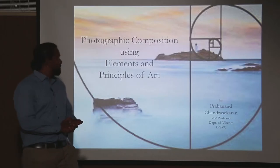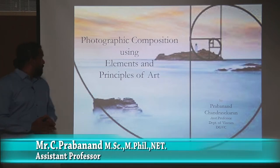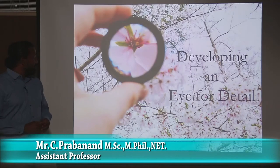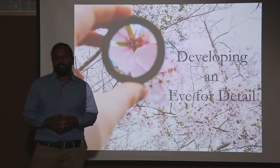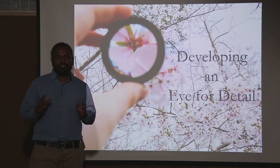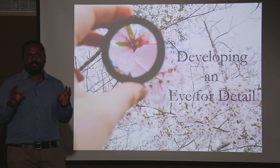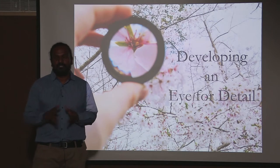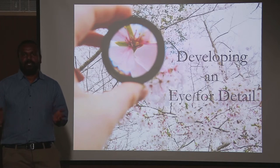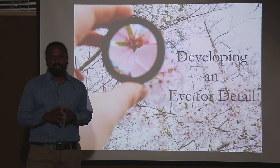Today we are going to see the class for photography composition using elements and principles of art. The most important thing for a photographer is eye for detail — how a person observes things and sees different elements present in nature. A person can have an eye for detail or cannot, but it does not mean that a person without an eye for detail cannot be a photographer.